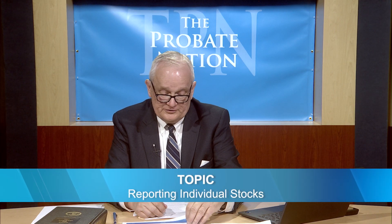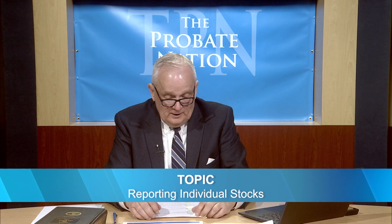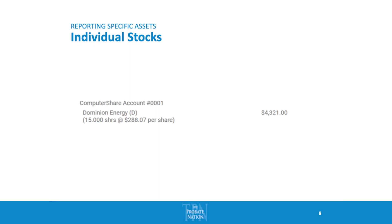For individual stocks — say you own Dominion stock not held through a brokerage account but directly with that firm — you list that you have Dominion stock, the number of shares (e.g., 10 shares), the price per share on the date you received it from the estate (e.g., $100 per share), and then the total: 10 shares times $100 equals $1,000.